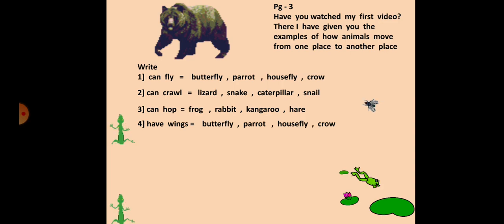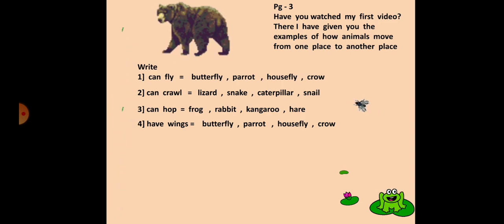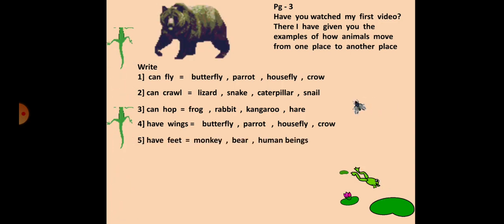The fourth one is have wings: butterfly, parrot, housefly, crow. Fifth one, have feet: monkey, bear, human beings.